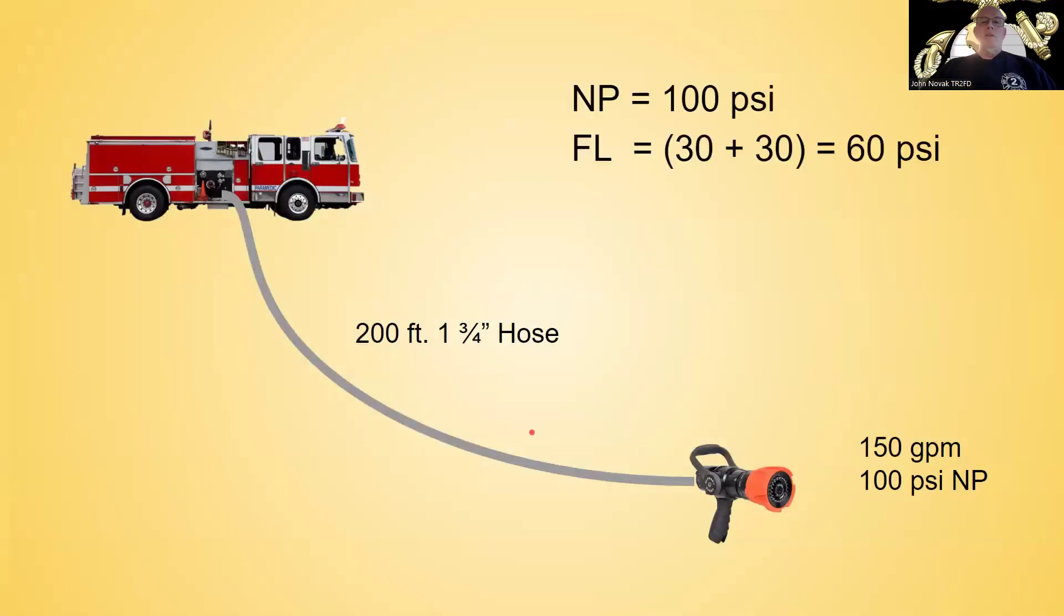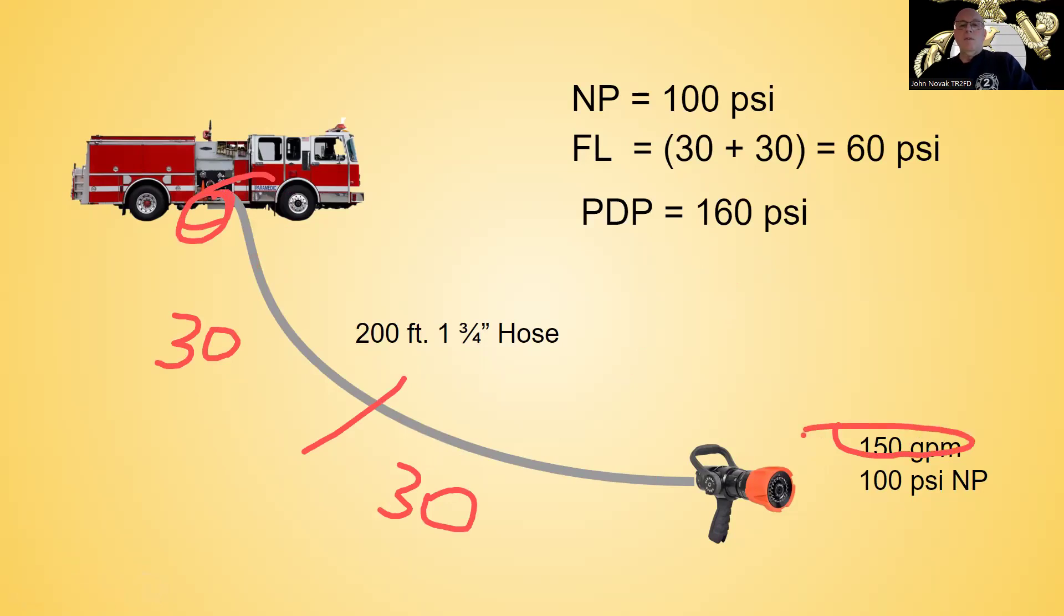I have 30 pounds of friction loss in this 100 feet of hose. I have 30 pounds of friction loss in this 100 feet of hose. I add that together. It gives me 60 PSI plus the 100 pounds nozzle pressure. So it gives me my pump discharge pressure at 160. So if I pump 160 over here, I'm going to get 150 over here.